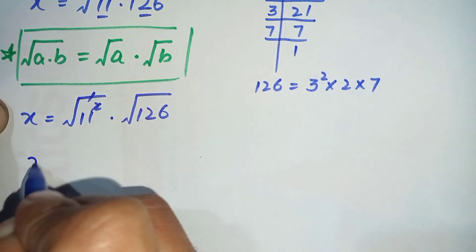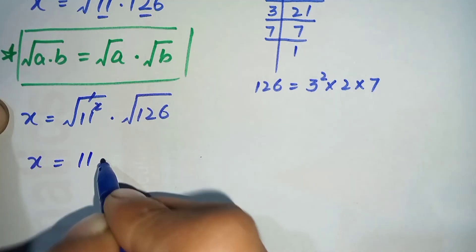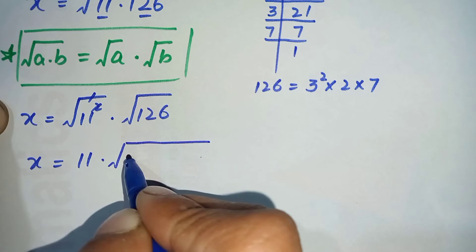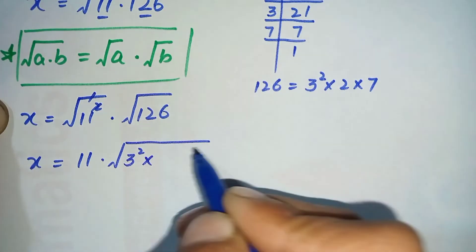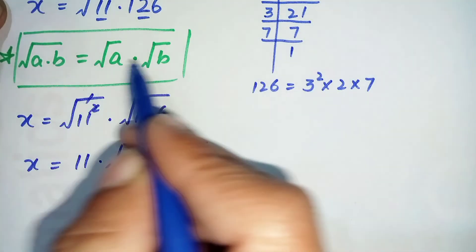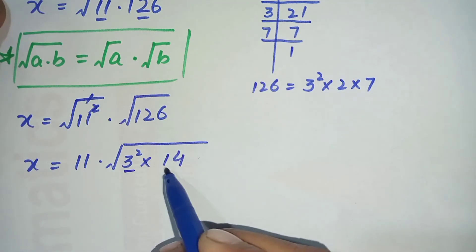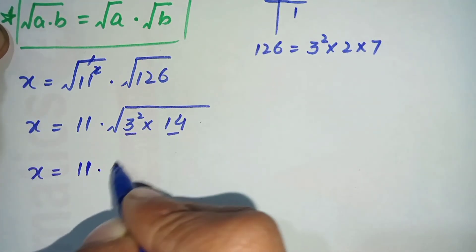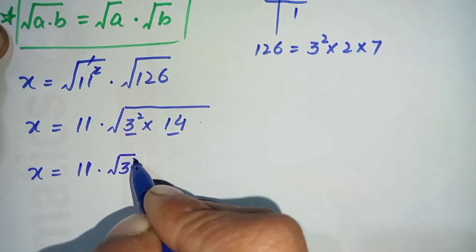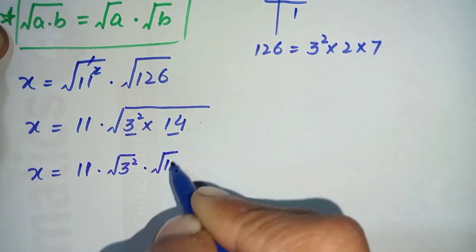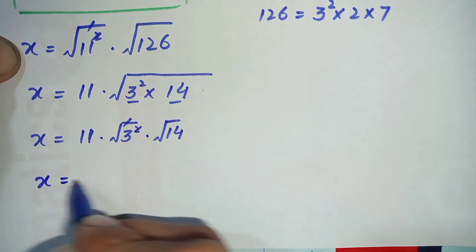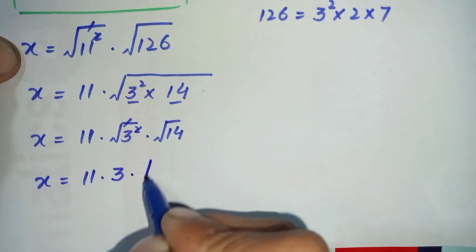The square and square root on 11 squared cancel each other, leaving just 11. We replace 126 with its exponential form: 3 squared times 14. Splitting the square root again, we get x is equal to 11 times the square root of 3 squared times the square root of 14. The square and square root on 3 squared cancel, leaving 3.